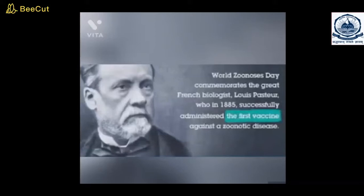World Zoonosis Day is held every year on July 6th. The day commemorates July 6th 1885, when Louis Pasteur successfully administered the first vaccine against the rabies virus, a zoonotic disease.